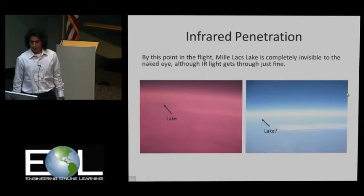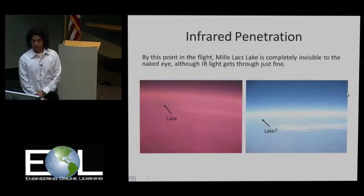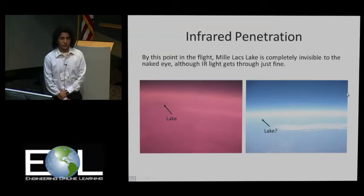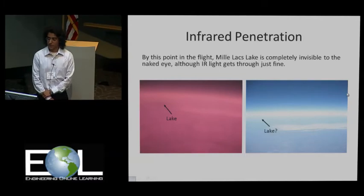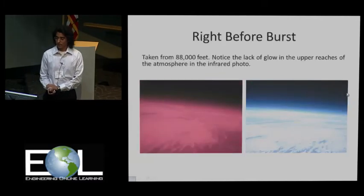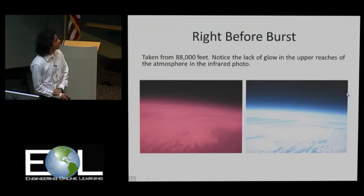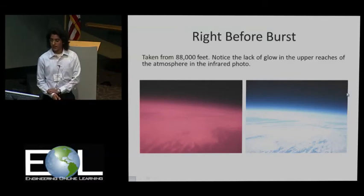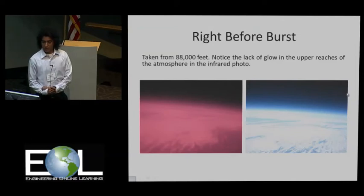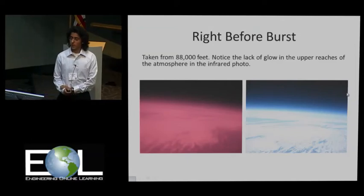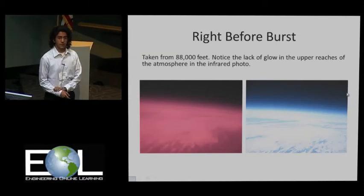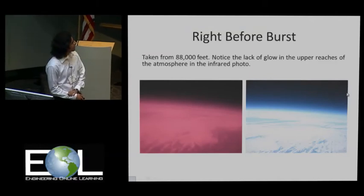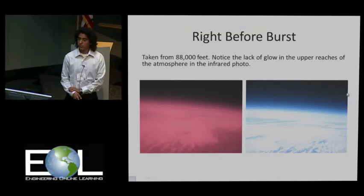This photo is again of Mille Lacs Lake. In the visible light photo, you can see that it's almost invisible to the naked eye, but the infrared photo captures it as a dark patch. These photos were taken minutes before the balloon burst at 88,000 feet. The upper reaches of the atmosphere seem to give off a distinct glow in the visible light photos, which is not present in the infrared photos, again suggesting that a lot of infrared light penetrated well through the atmosphere.